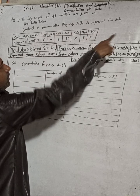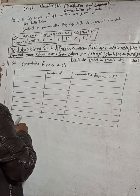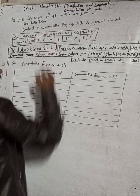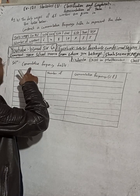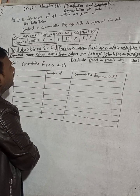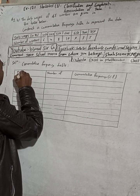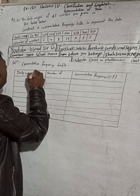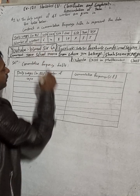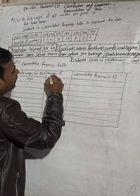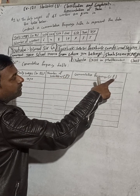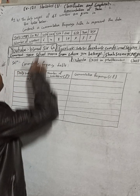Here I have written a spelling mistake — this is 'cumulative', CU — cumulative frequency table. Now, first of all write 'daily wages' in the first column. This is the number of workers, represented by small f, which means frequency. And cumulative frequency is CF.